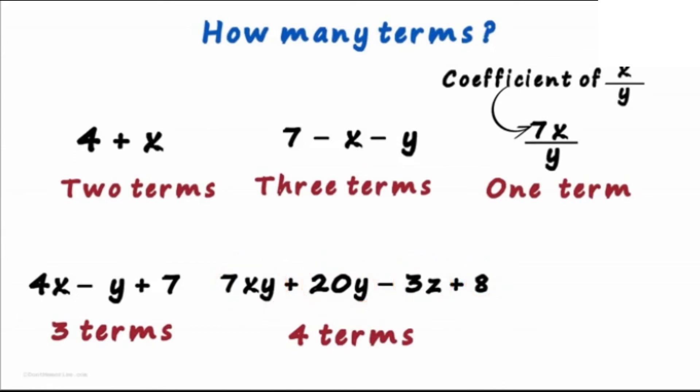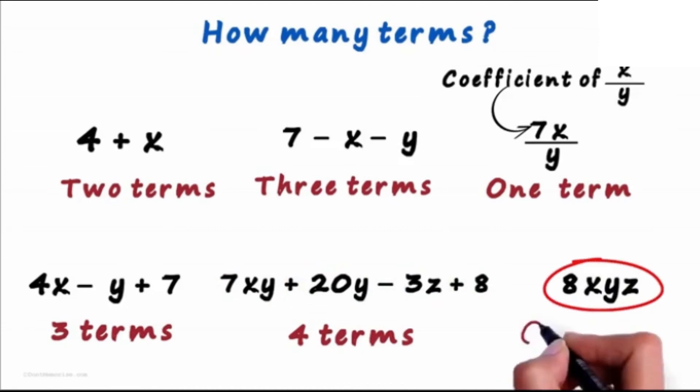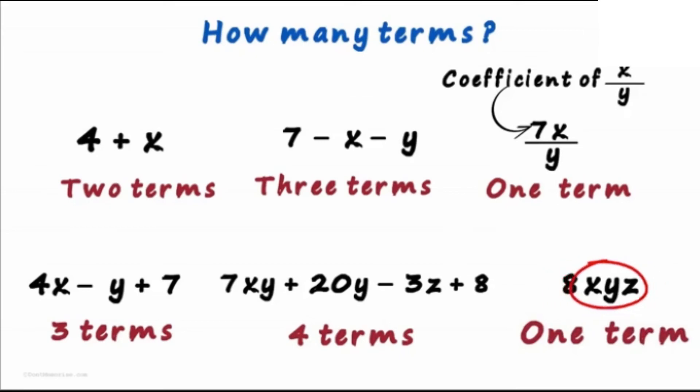Here's the last expression, 8xyz. Since it involves only multiplication, this is just one single term. Even though there are three variables and a constant, this is a single term.